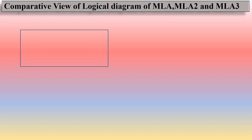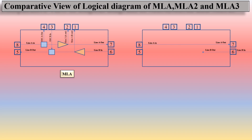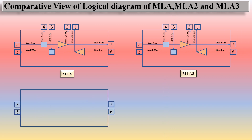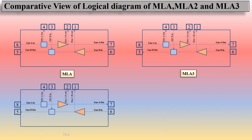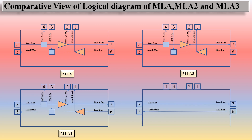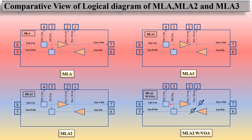The logical diagrams are also very similar for MLA, MLA2, and MLA3. The only difference is that MLA2 has two variants — one without VOA and one with variable optical attenuator, where two VOAs are placed at the output of each EDFA. MLA3 is very similar to MLA2 but without the VOA option. This covers all the differences between MLA, MLA2, and MLA3.